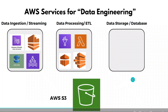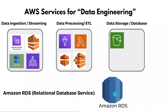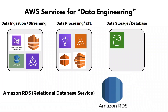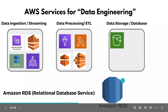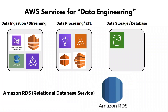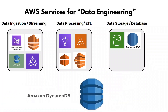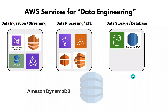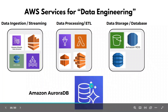The next service is Amazon RDS, a fully managed database service. You can create a database of your choice — MySQL, Oracle, PostgreSQL — using Amazon RDS and get it up and running quickly. The next is Amazon DynamoDB, a NoSQL database by Amazon that is very fast and is used to store NoSQL data.